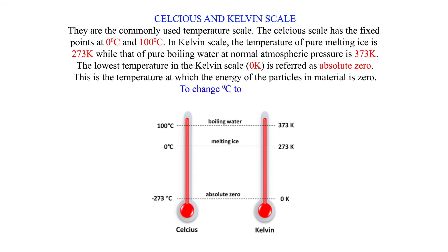To change degrees Celsius to Kelvin: Temperature in Kelvin equals temperature in Celsius plus 273.